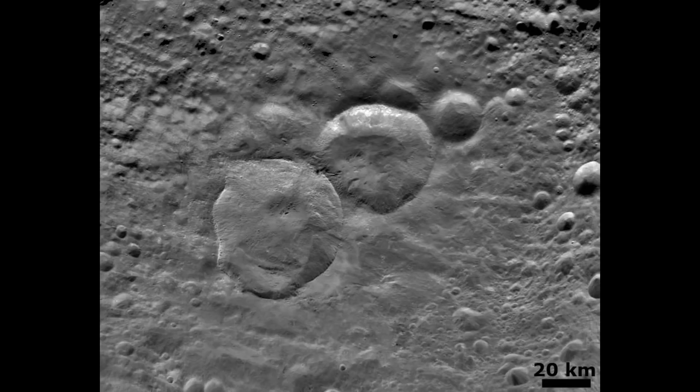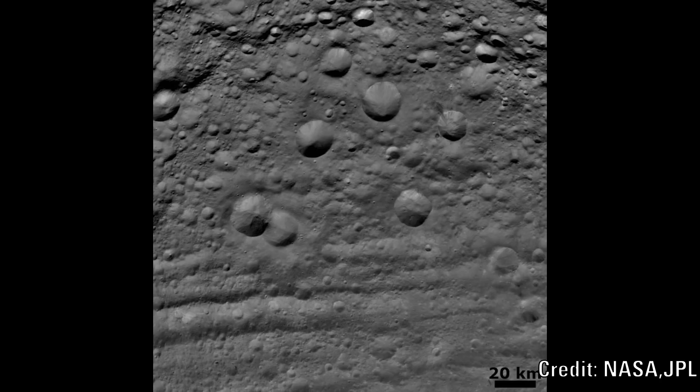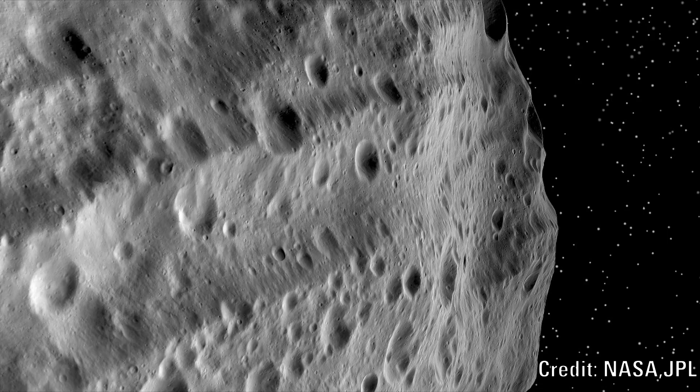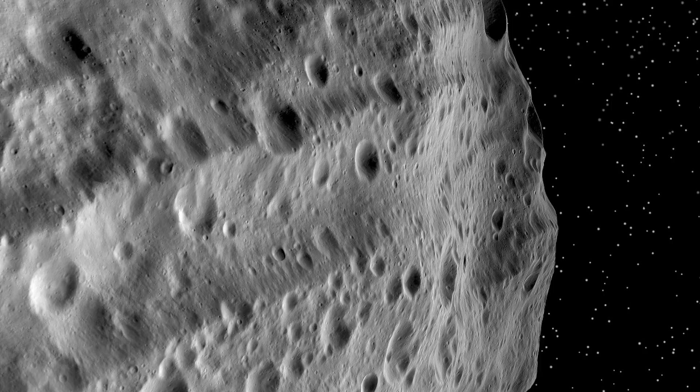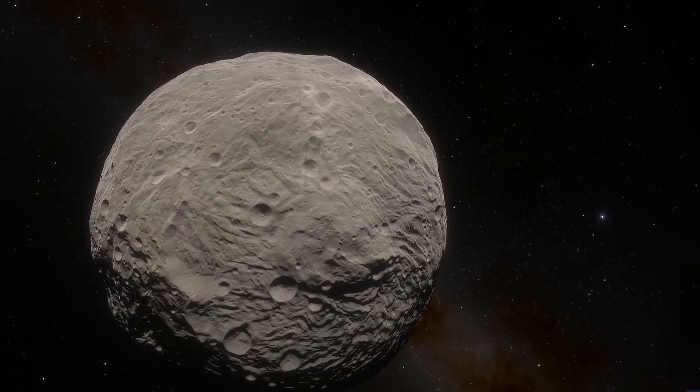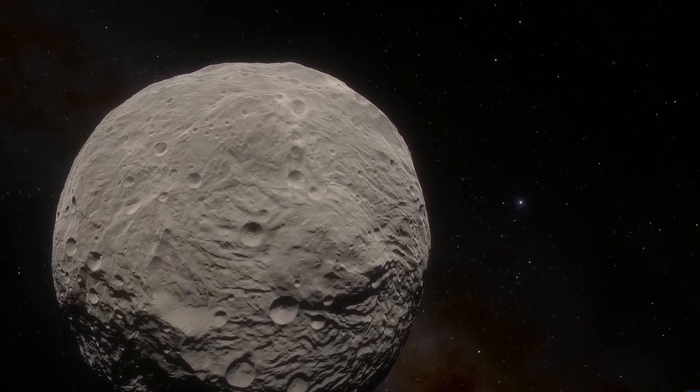Now astronomers usually try and date features by a process called crater counting. Here the assumption is that the craters will occur randomly. Older surfaces would therefore have been hit more often than younger ones and will therefore display more scars. But when they examined the craters on Vesta, they found that there wasn't enough information to solidly determine how the basin and troughs were related to each other.